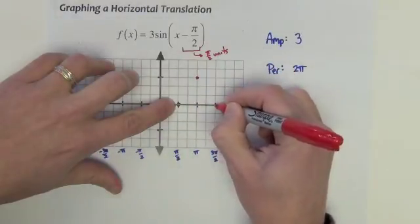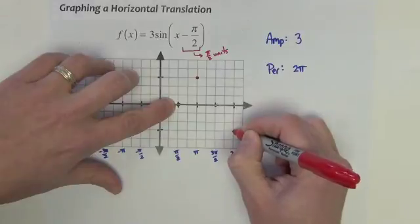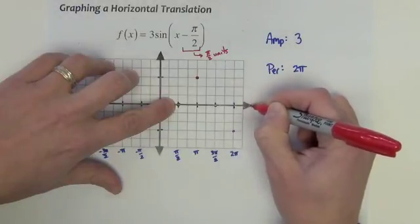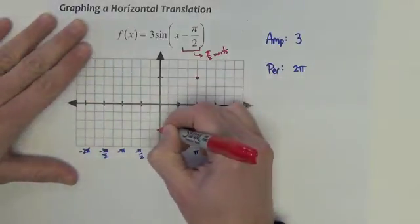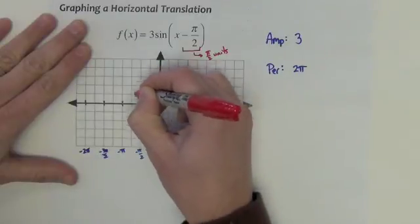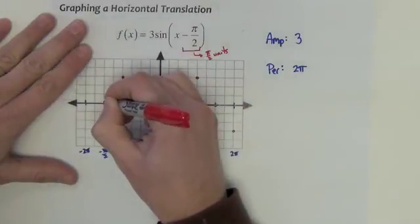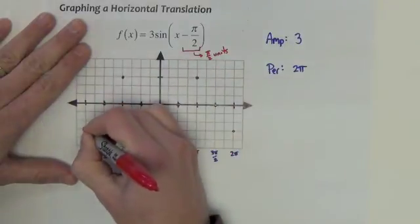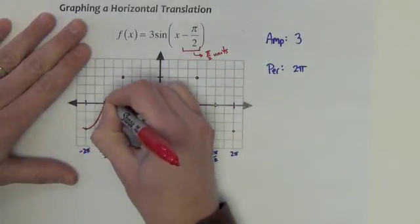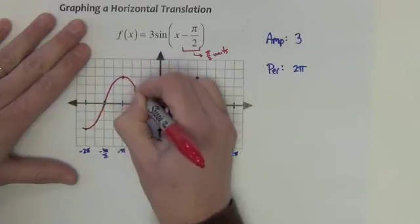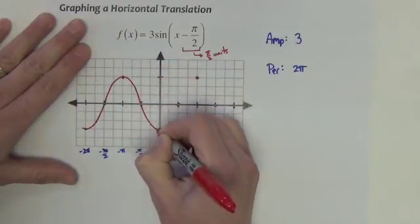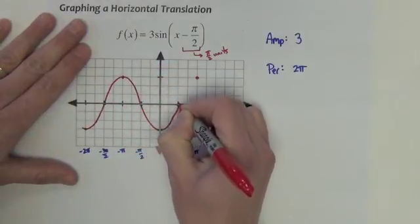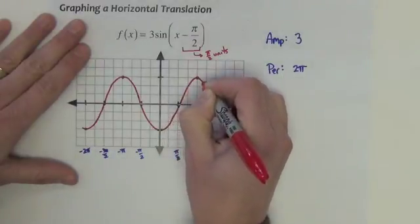Up its amp, back to zero, down its amp, and then back to zero is actually off the graph here. So we'll just pick up the pattern down to the left. And it's going to look kind of like this.